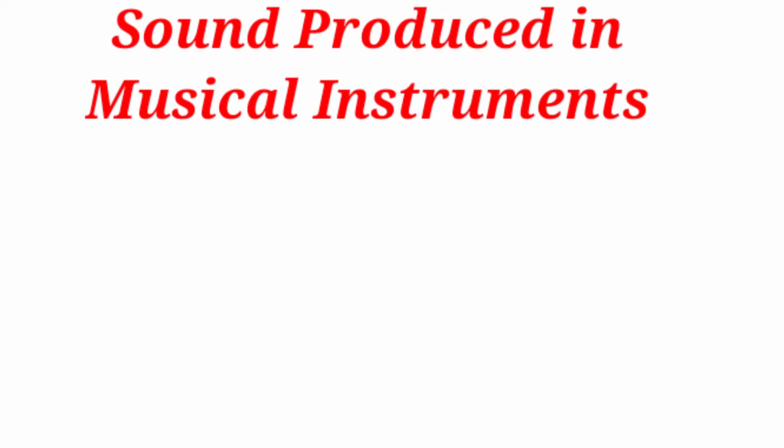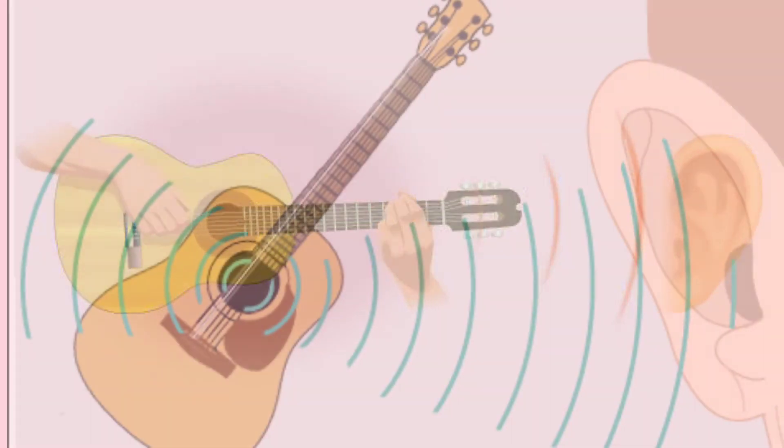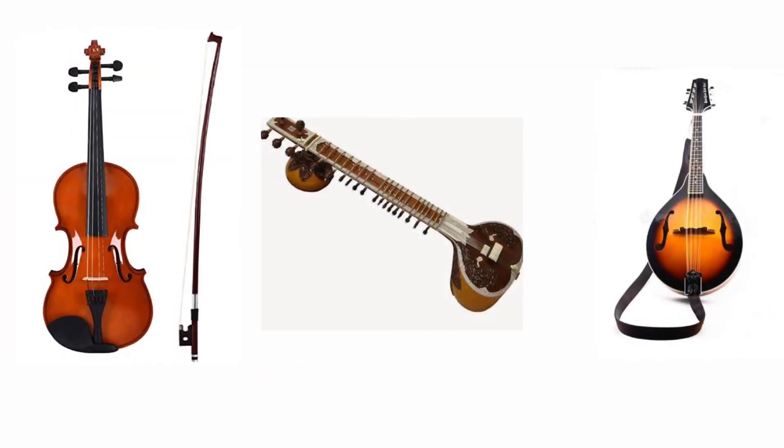Sound produced in musical instruments. First one, guitar. When you pluck the strings, it vibrates and produces sound. But not only the vibration is produced by the strings of the guitar, but also the air inside the guitar vibrates and the sound is produced. Similarly, violin, sitar, and mandolin are some other examples of string-type musical instruments.